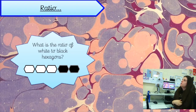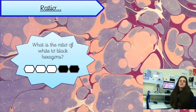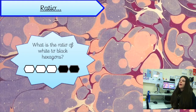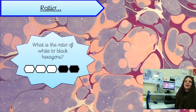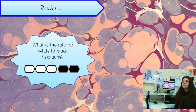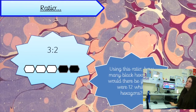So, ratio. Have a little look — what is the ratio of white to black hexagons? Angel says three to two — good girl. How do you know it's three to two and not two to three? Cameron, yeah, good boy. We've talked a lot about this in our lessons on ratio: it's really important to read the question very carefully and know which parts you're going to put first, because that can be a big problem with ratios if we get it the wrong way around. Well done — so it's three to two.